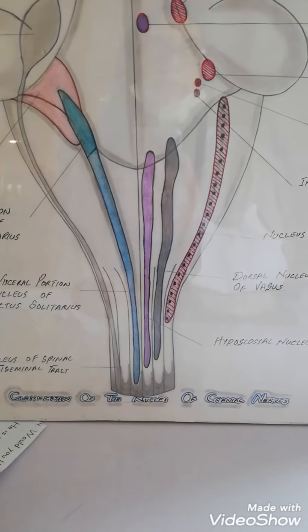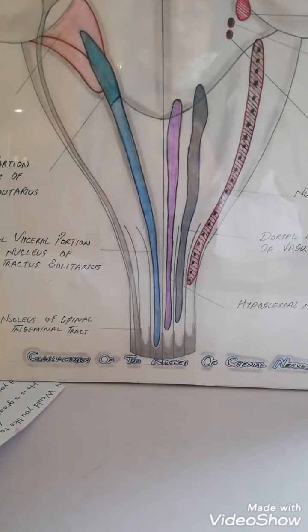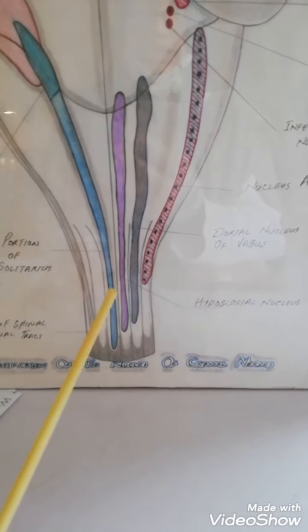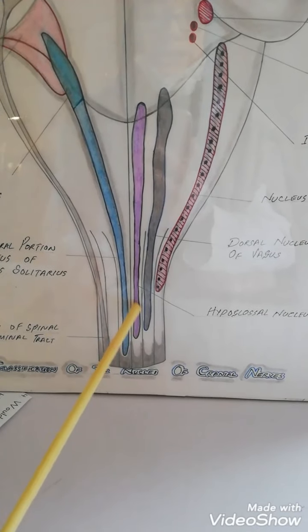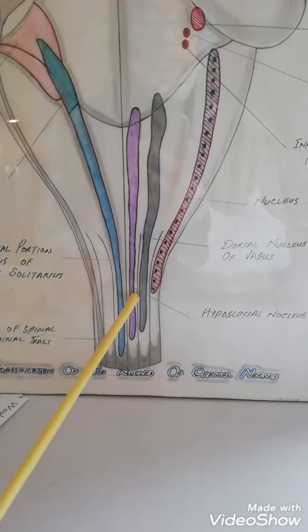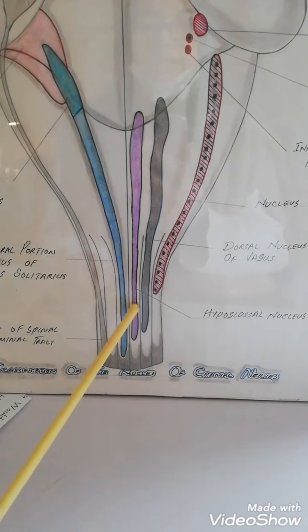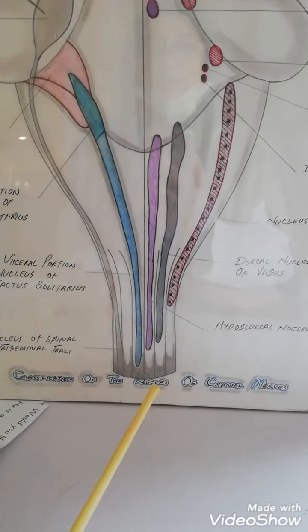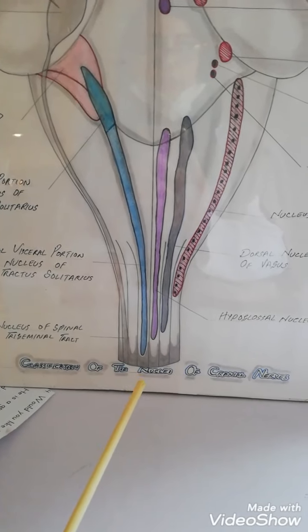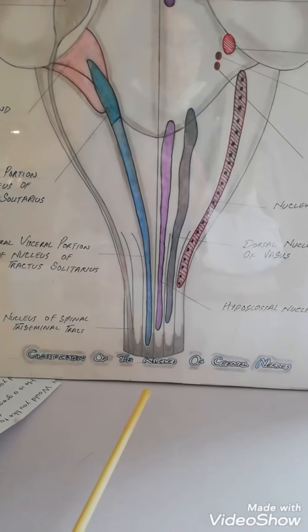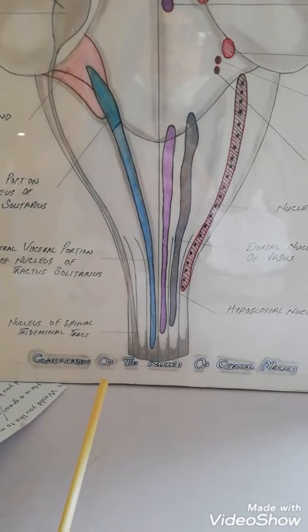The accessory nerve supplies the trapezius and sternocleidomastoid muscles for shrugging of the shoulder. The twelfth cranial nerve — the hypoglossal — is pure motor and supplies the tongue muscles. Its nucleus is the hypoglossal nucleus. These lower four cranial nerves are located in the medulla.